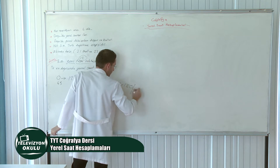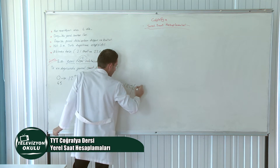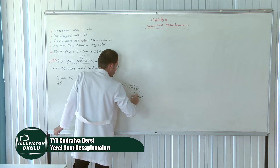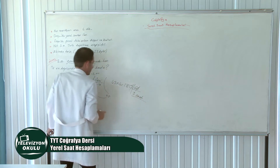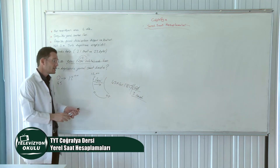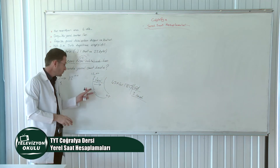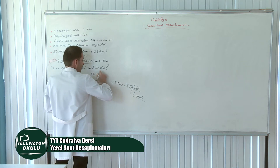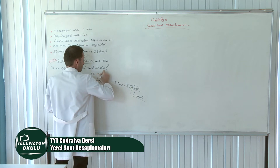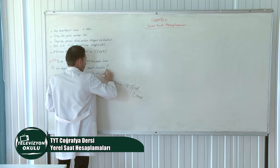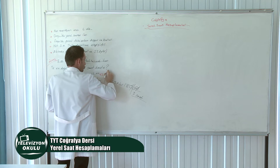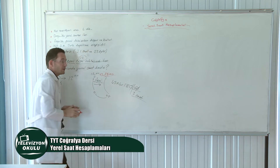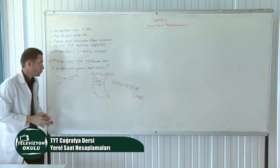180 dakikayı saate çevireceğiz: 3 saat yapar. Saatimiz 3 saat ileri olacak. 12.00'a artı 3 eklediğimizde Türkiye'nin en doğusunda yerel saat 15.00'ı gösteriyormuş.